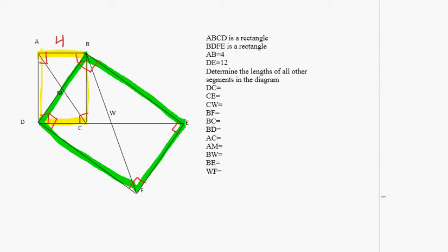We're also given that AB is 4, DE is 12. Well, opposite sides of a rectangle are congruent, so if AB is 4, DC is also 4. If DC is 4 and DE is 12, the remaining piece has to be 8.